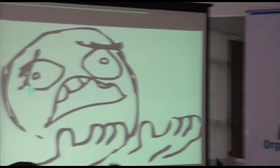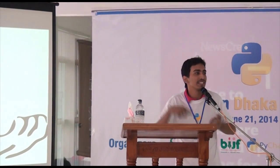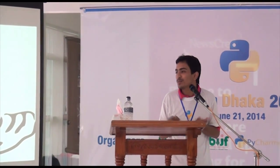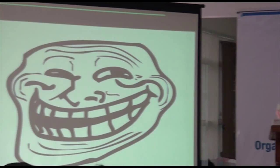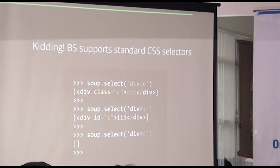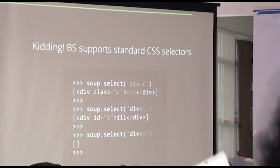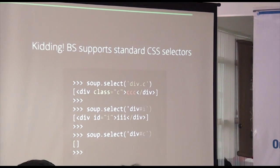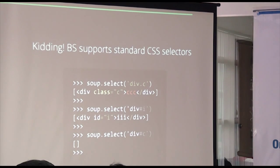Why do we use CSS selectors? Because we are programmers. We can use CSS selectors with .select — it follows the W3C standard. We use CSS selectors alongside find_all.